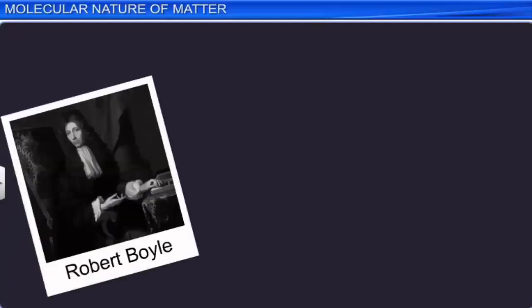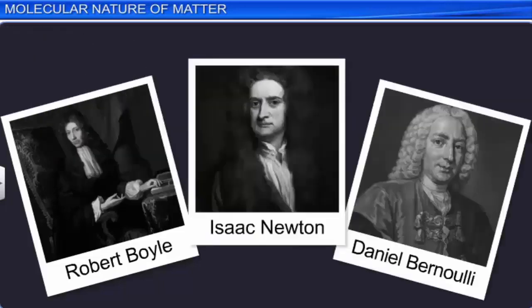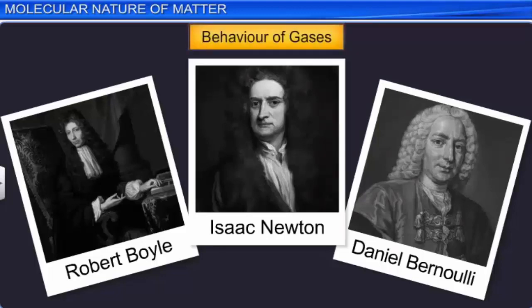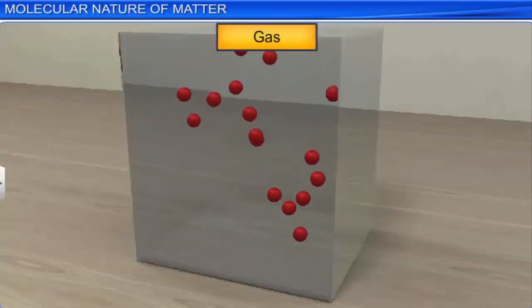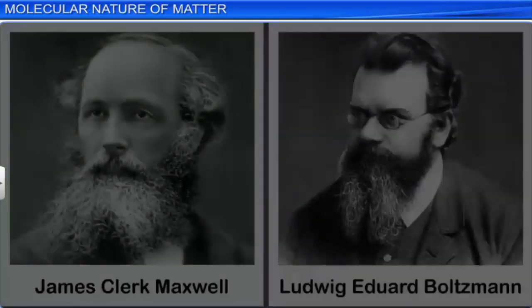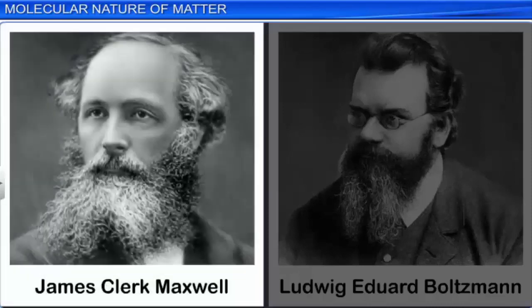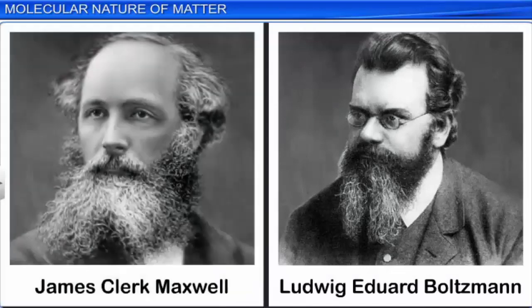Almost 150 years before actual atomic theory was established, Boyle, Newton, Bernoulli and several other scientists tried to explain the behavior of gases. They considered that gases are made up of tiny atomic particles. Later in the 19th century, Maxwell, Boltzmann and others successfully developed Kinetic Theory.